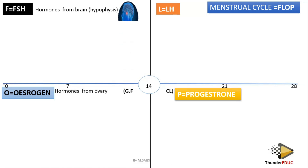What about oestrogen and progesterone? These ones are being produced from the ovary. Oestrogen is being produced from the graafian follicle, while progesterone is being produced from the corpus luteum.